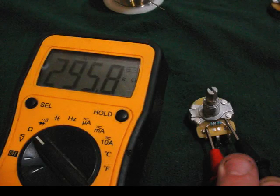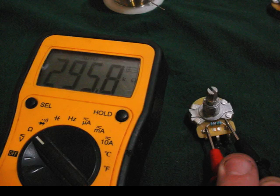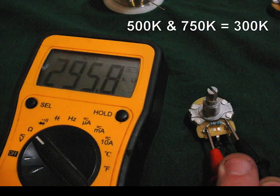Let's go ahead and measure this new pot and see what our value is. So again, I have the multimeter on the outside lugs of the pot, and our reading is 295k. Close enough to 300 to be satisfactory for me.